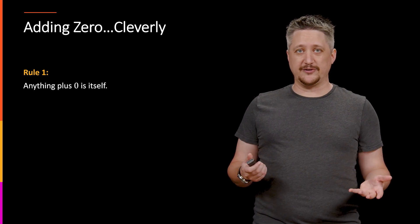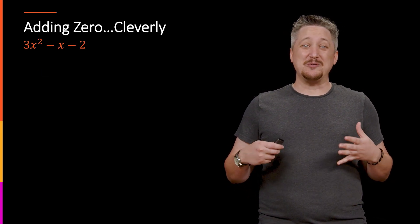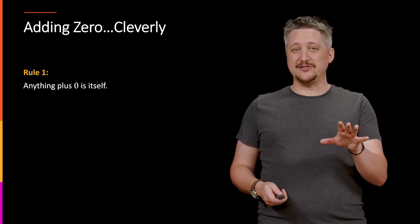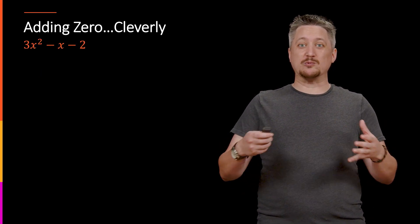So anything plus 0 is itself, quote unquote. Again, ignoring things like infinity where things always get weird. And then we want to use that, right? So we want to use this ability, this anything plus 0 is itself, to generate some sort of way of getting around a problem.